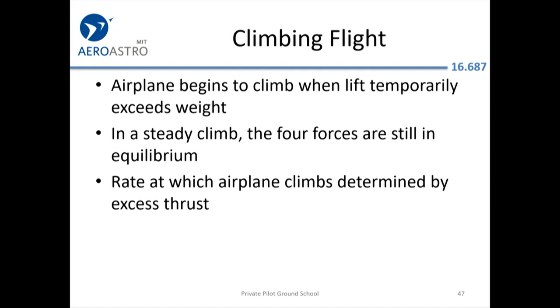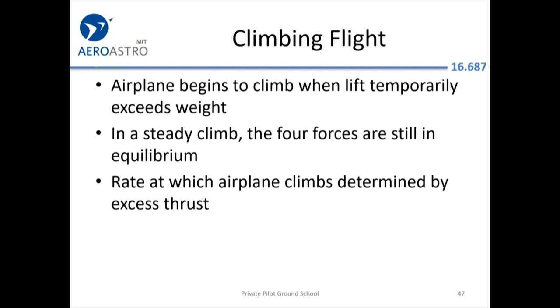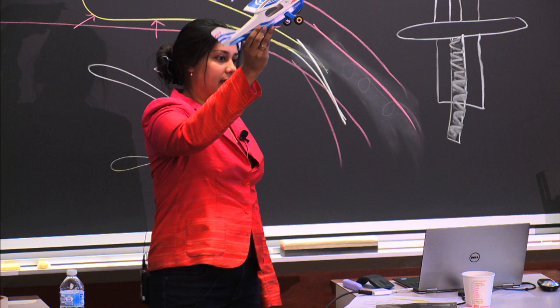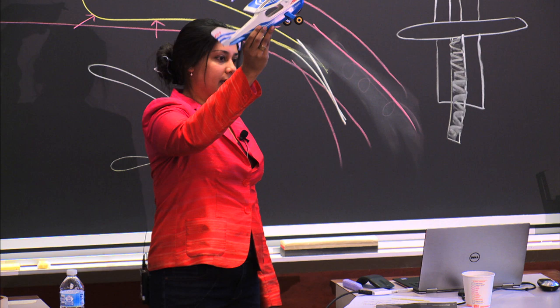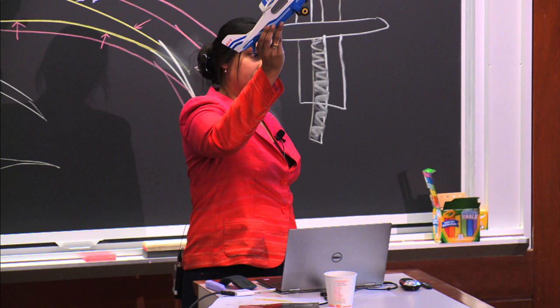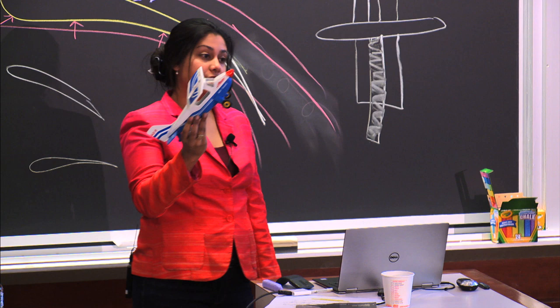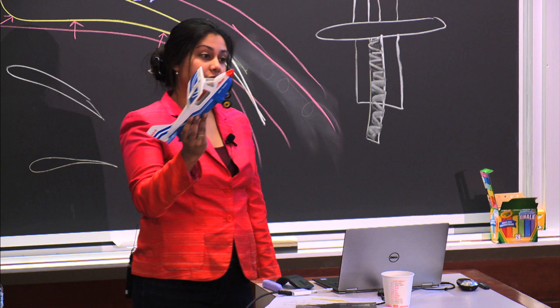Let's talk about maneuvering flight. When flying straight and level, you're in equilibrium where lift and weight cancel out. Climbing is when your lift temporarily exceeds the weight. Once you're in a steady climb, your forces can still be in equilibrium — because F equals ma, and if you're not changing your velocity in a steady climb, you're also not accelerating.